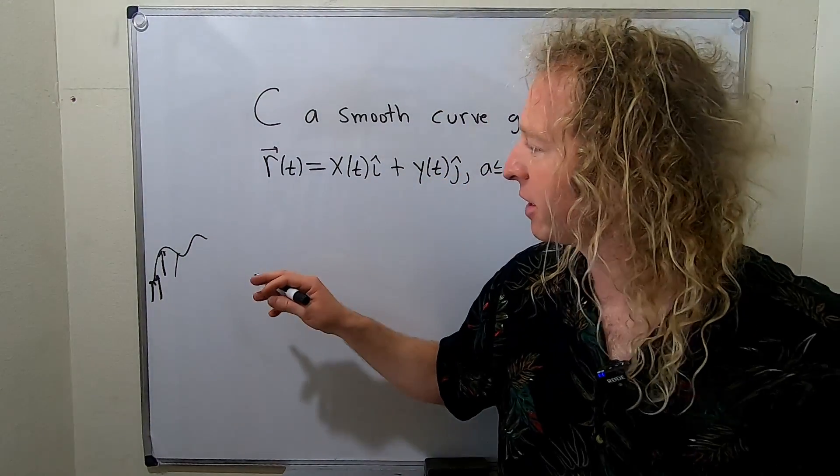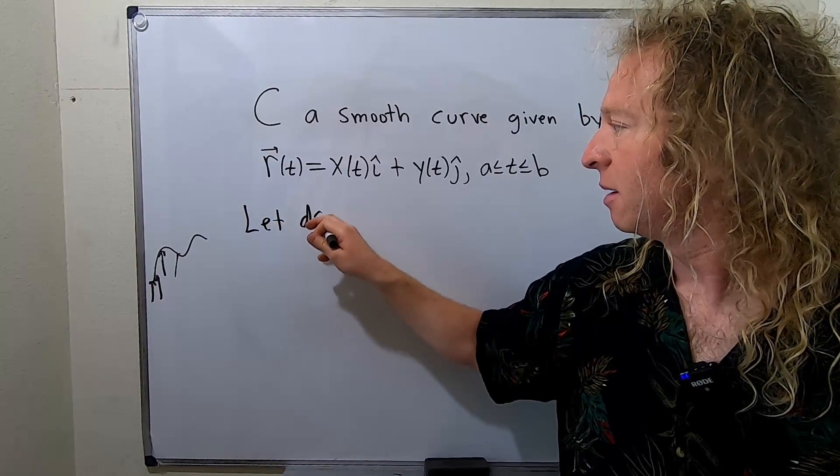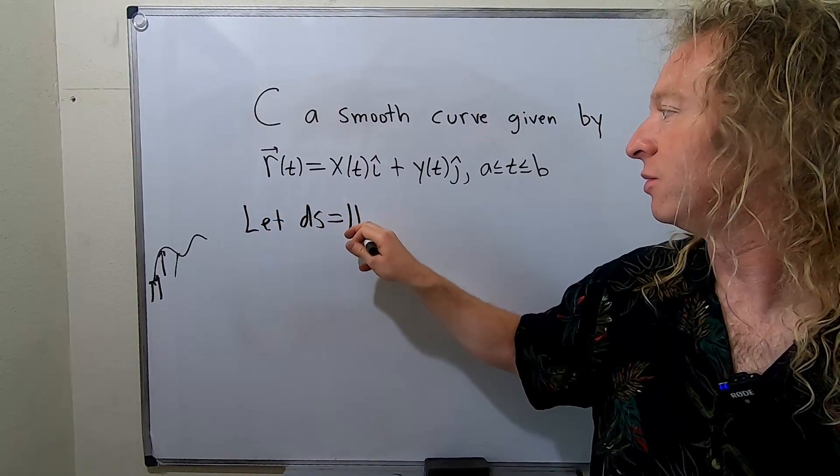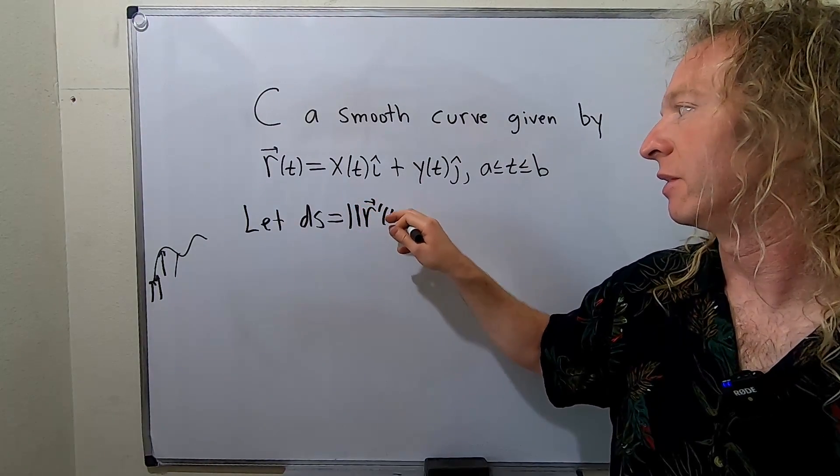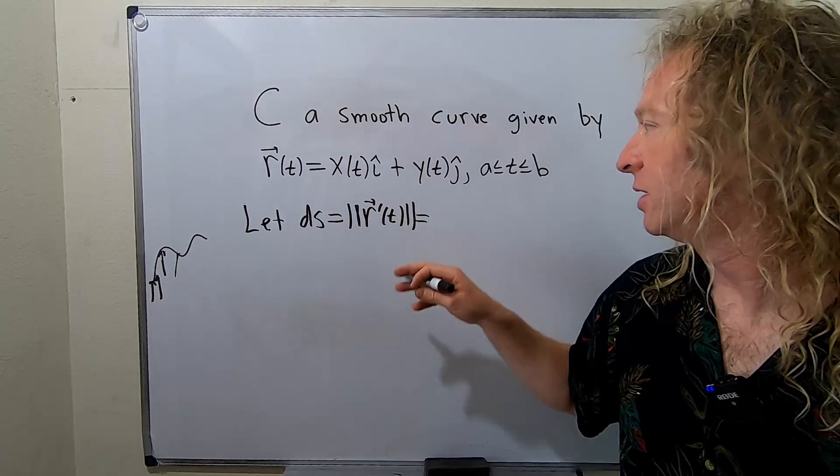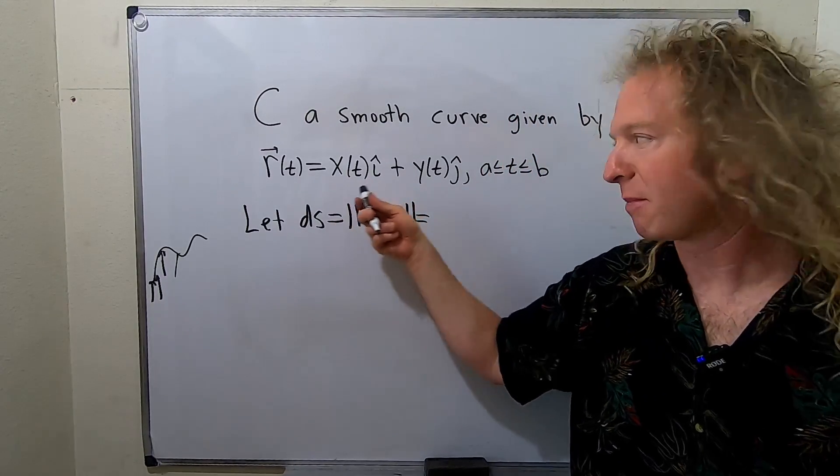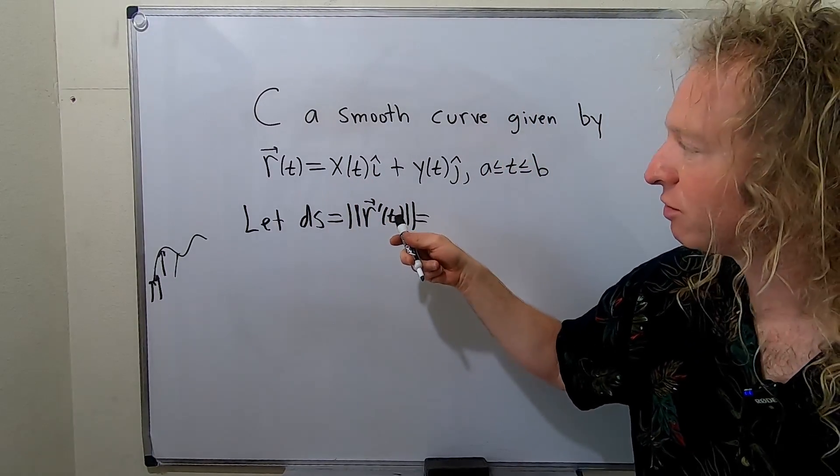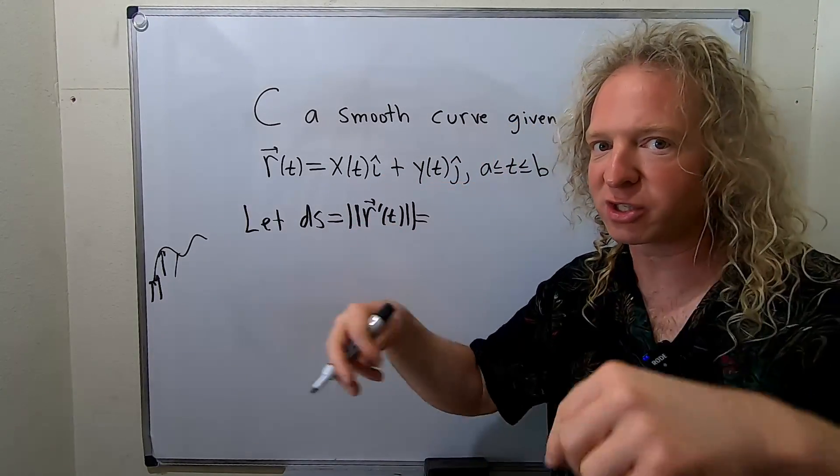Then we're going to define the following. We're going to let ds be equal to the magnitude of R'(t), like this. And so basically, to find R' you take the derivative, so you would get x' and y'. And the magnitude of that would be the square root of the sum of the squares of the components.